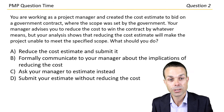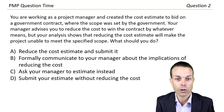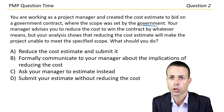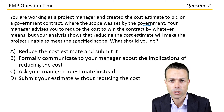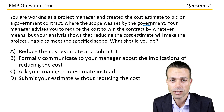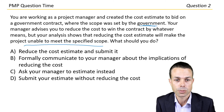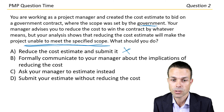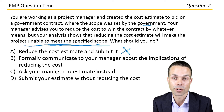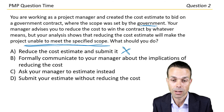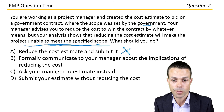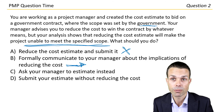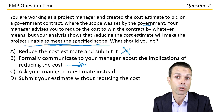Let's look at question two. You're working as a project manager and created a cost estimate to bid on a government contract where the scope was set by the government — so this is a tender proposal, maybe a procurement question. Your manager advises you to reduce the cost to win the contract by whatever means, but your analysis shows that reducing the cost estimate will make the project unable to meet the specified scope.